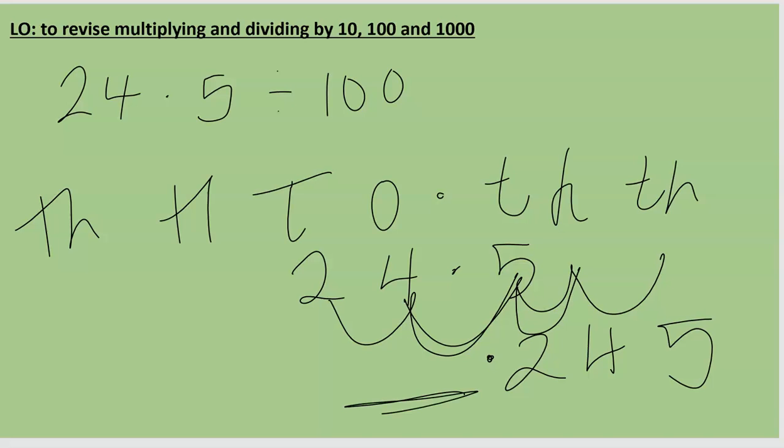Now I've got a little gap here before the decimal point, so I'm going to add in a zero to show that the number is less than one. And so 24.5 divided by 100 is going to be 0.245. So you should have everything you need now to work on the questions I have given you in the folder.